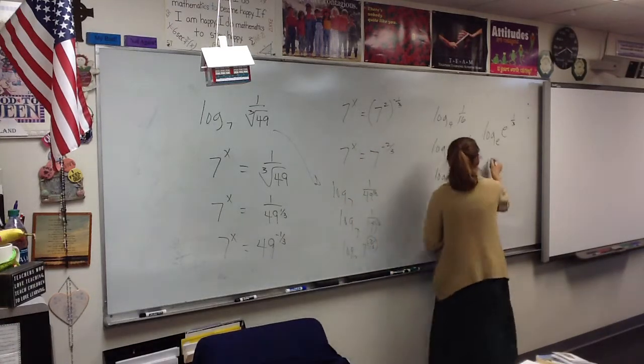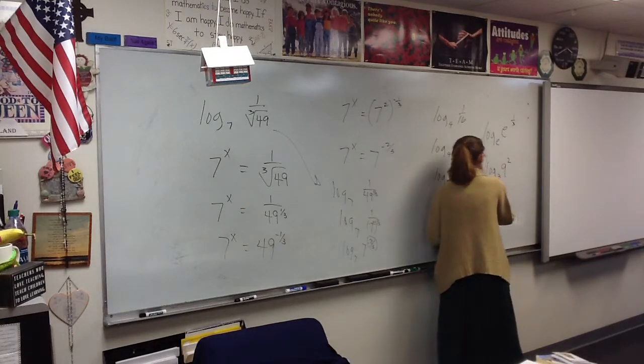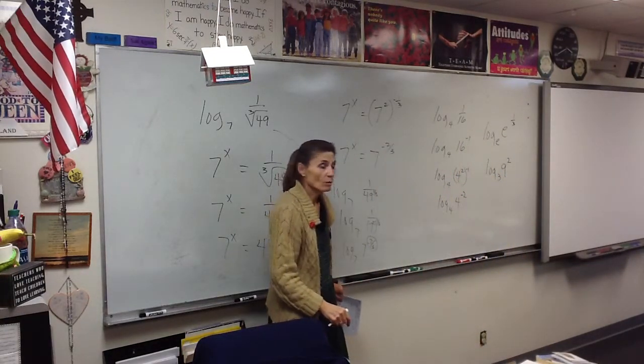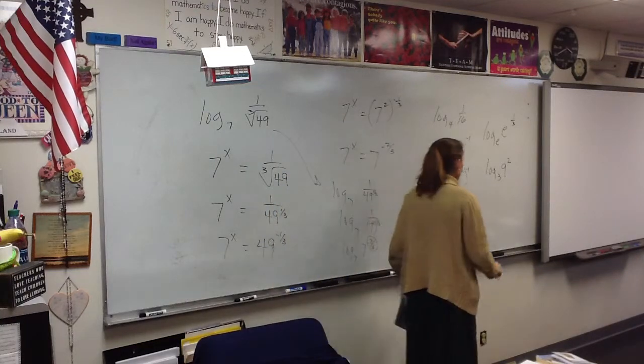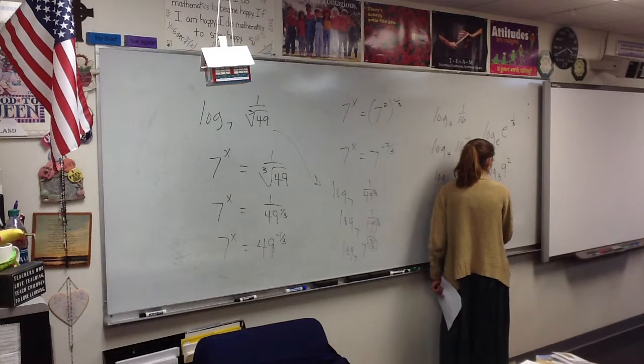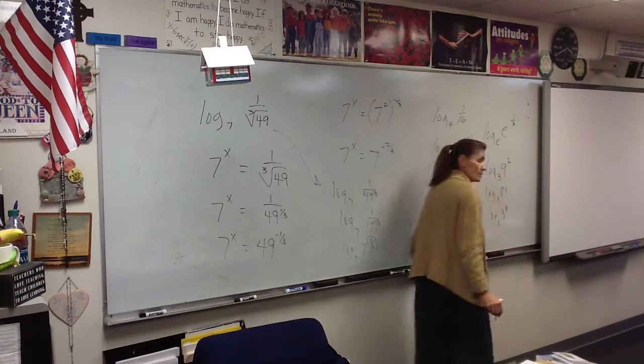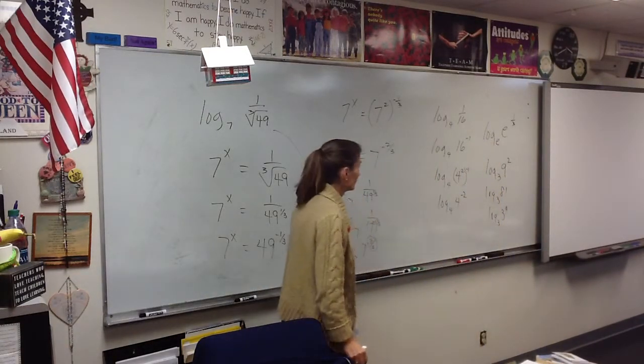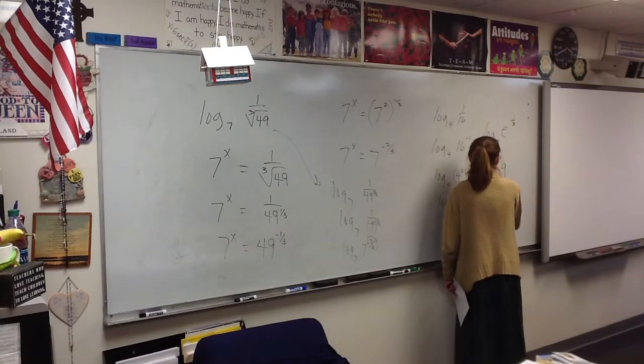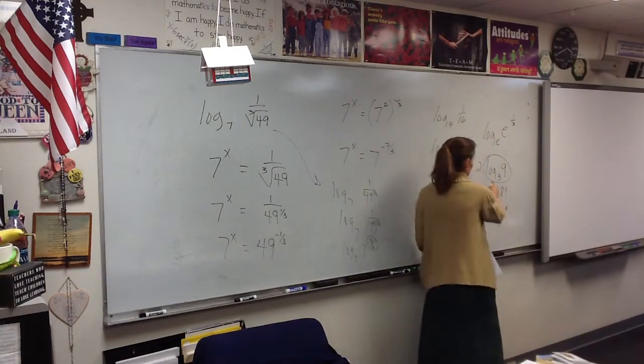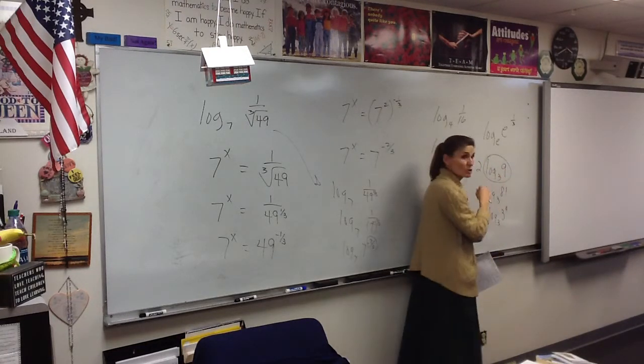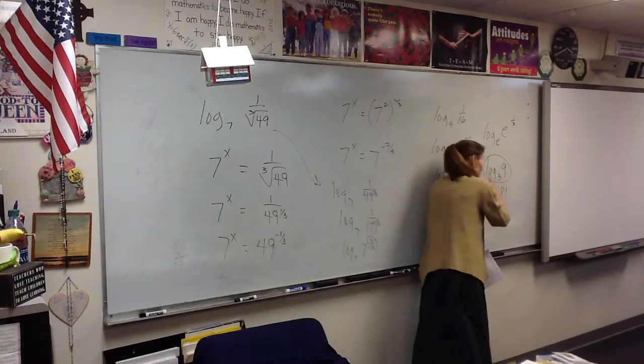C is the log base 3 of 9 squared. Remember, a number out in front represents an exponent. So we have the log base 3 of e to the 1 or the log base 3 of 3 to the 4. You could also have evaluated this part of the problem. This is the log base 3 of 3 squared. So this is 2 times 2 is 4. So you can get 4 either way.